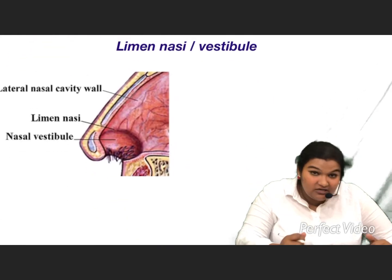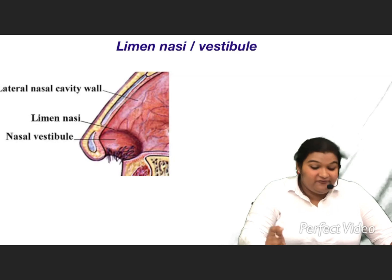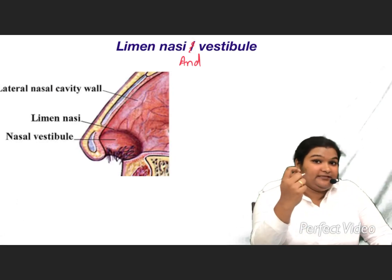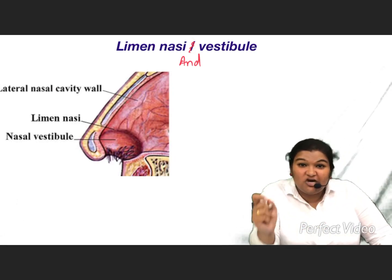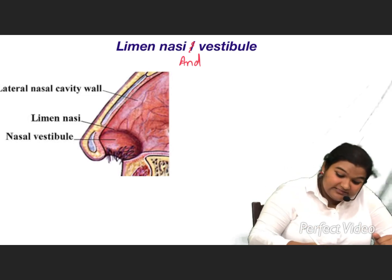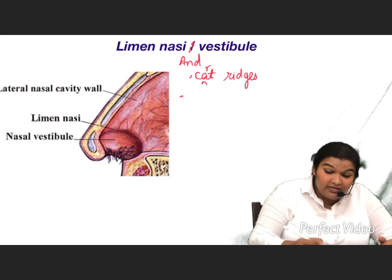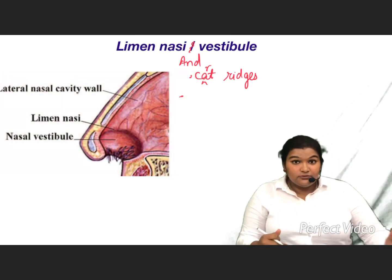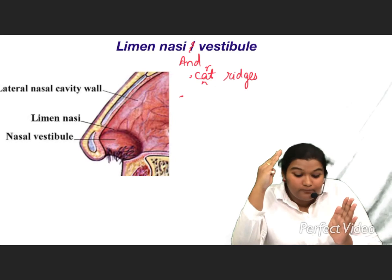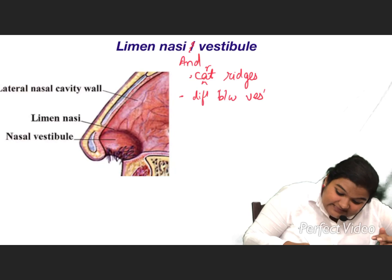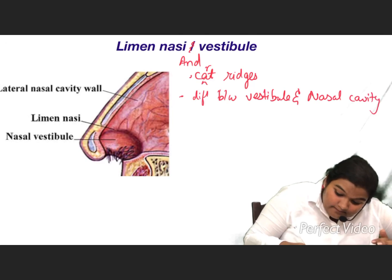Now let us move towards the next topic in our list: limen nasi and vestibule. The limen nasi is a cartilaginous ridge. It separates the vestibule from the nasal cavity proper — it differentiates between the vestibule and the nasal cavity proper.